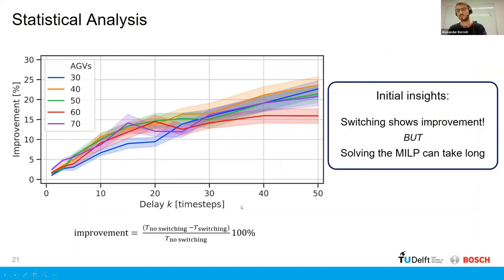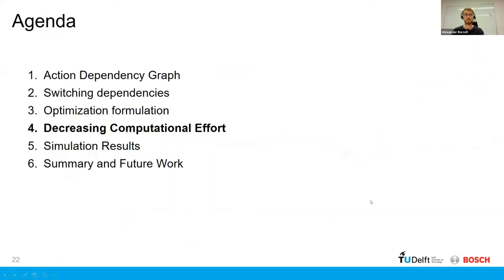But on the other hand is that we also noticed that, as it can be expected, that the MILP takes quite long, this optimization problem to solve. So we would like to address that, which brings us to part four, which is how to decrease the computational effort of this optimization.